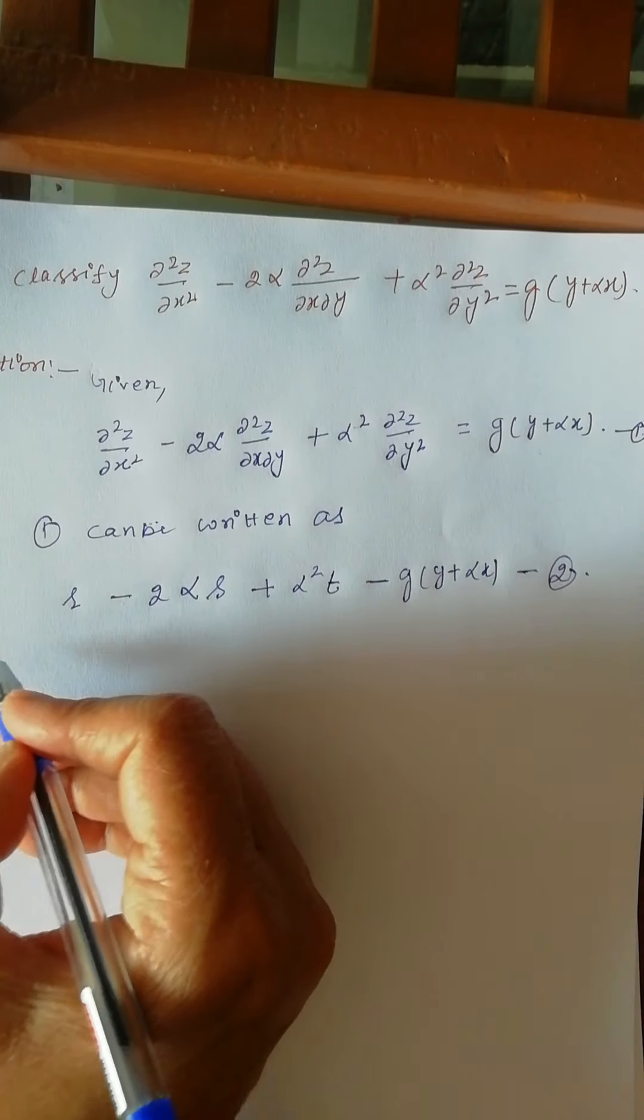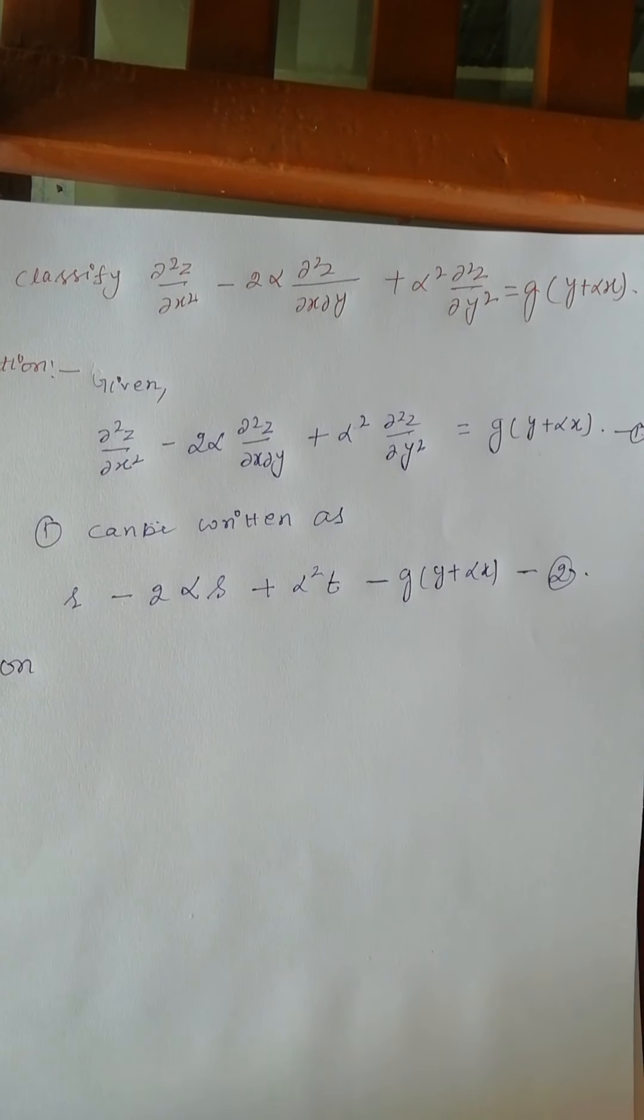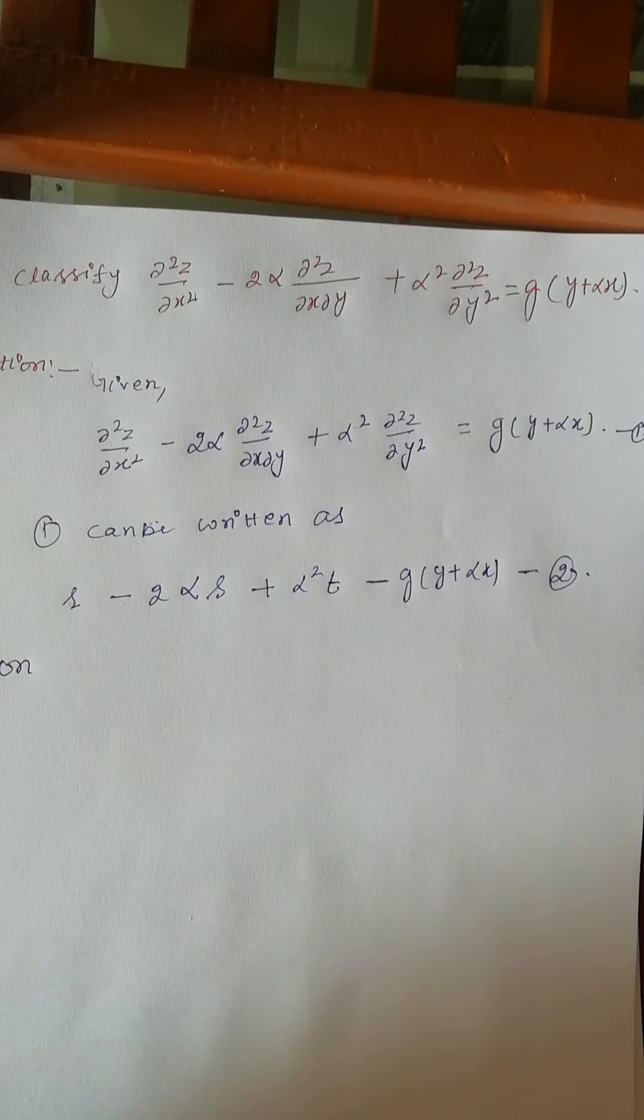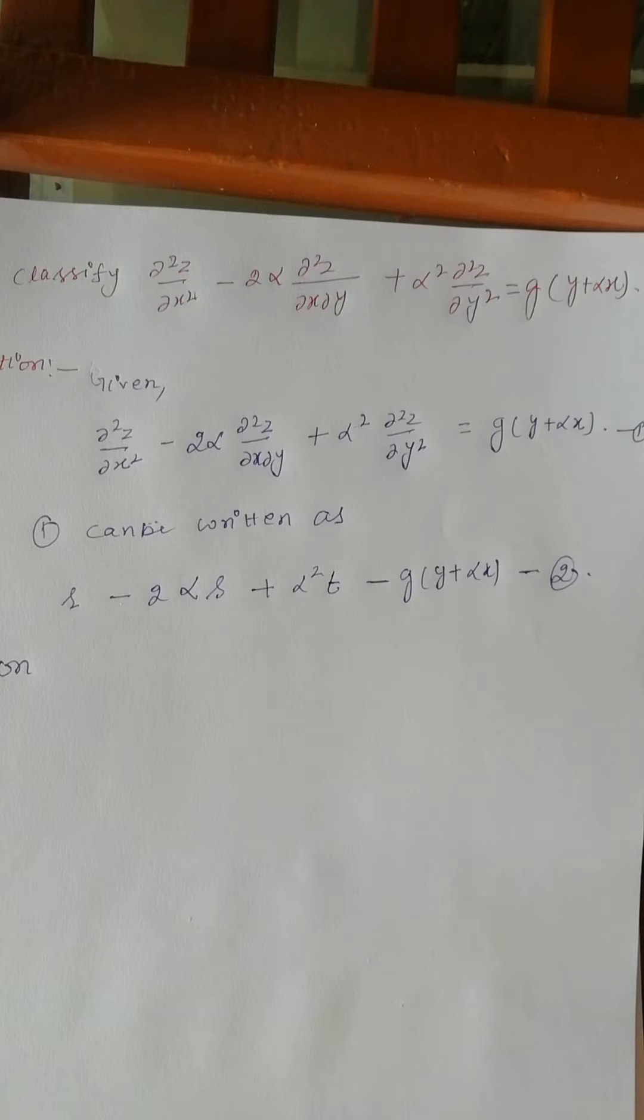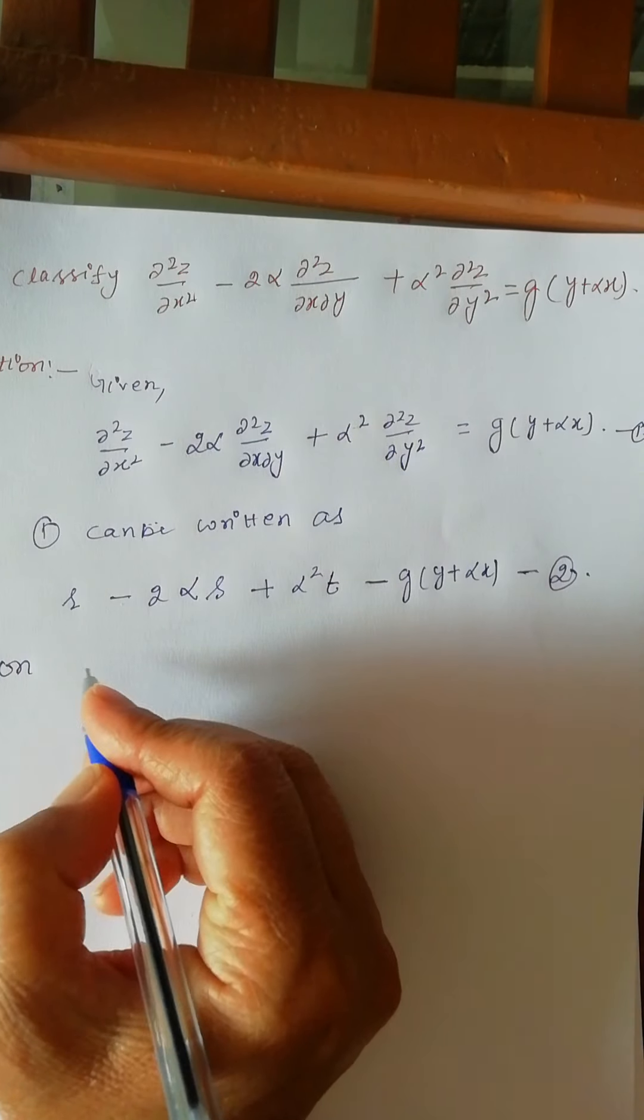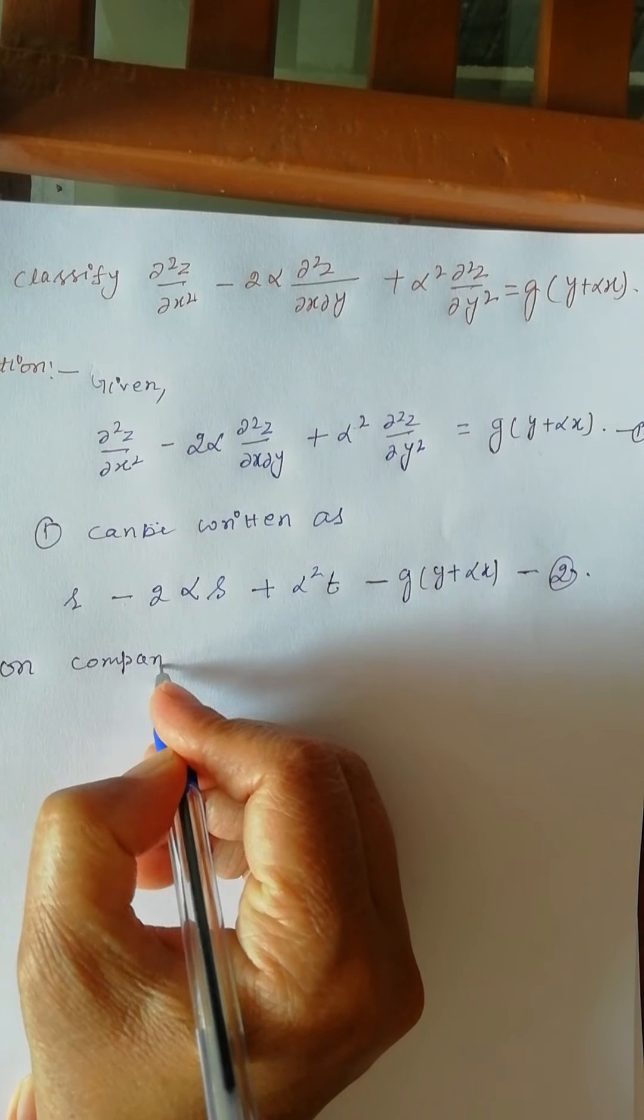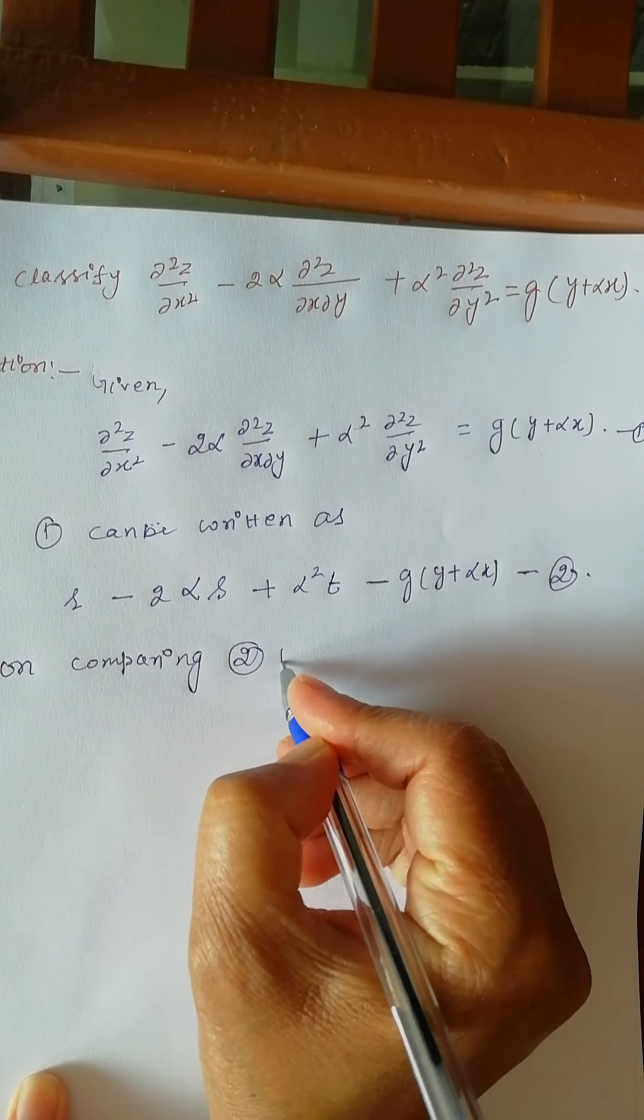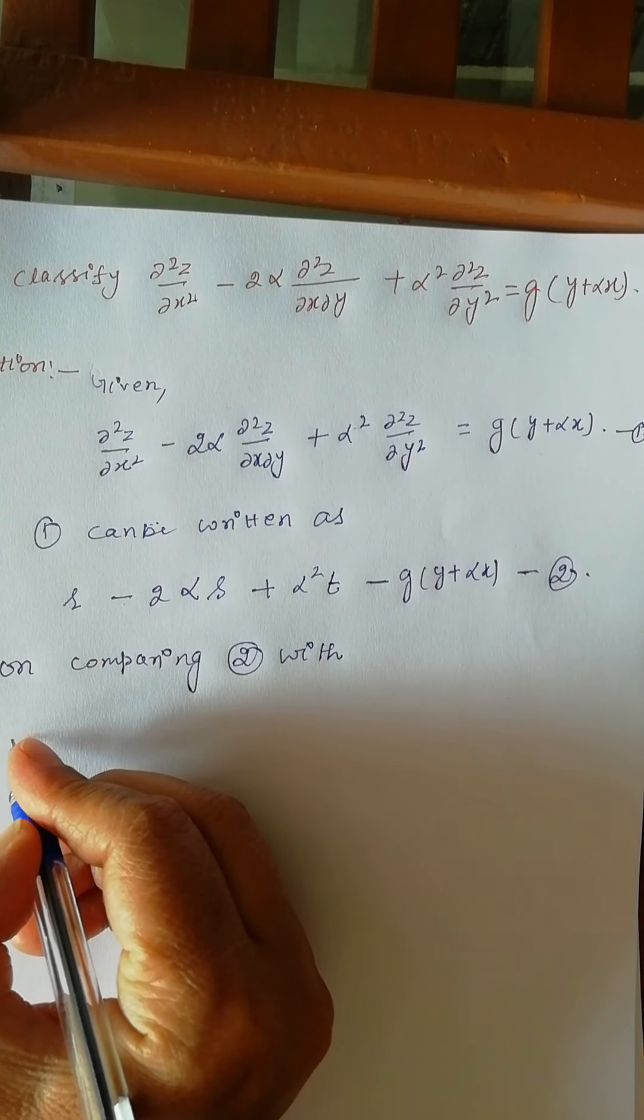Now after this you have to write on comparing because here we have to find S² - 4RT. If S² - 4RT = 0 then the given partial differential equation will be parabolic. If S² - 4RT is greater than 0 then the given equation will be hyperbolic.